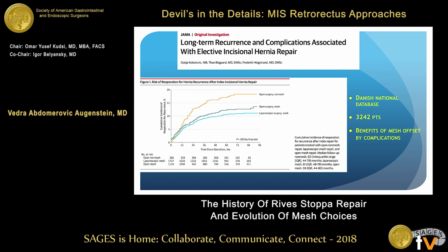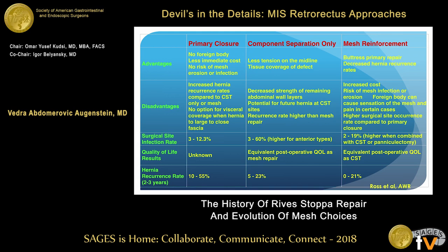In neighboring Denmark, an interesting paper came out basically warning us about using mesh because of all the complications. There's always a flip side of the equation — they essentially said maybe we shouldn't use mesh because it's such a huge problem. There are a lot of advantages and disadvantages. Sam Ross, one of our fellows in the lab, put this together looking at different recurrence rates, surgical site infection, comparing primary repair, component separation alone, or mesh reinforcement — which is what we most of the time do in our practice.